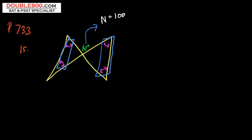We've got to follow the rules. If n is 100, we know supplementary angles equal 180. This has to be 80. Here's another line, so that's 80.